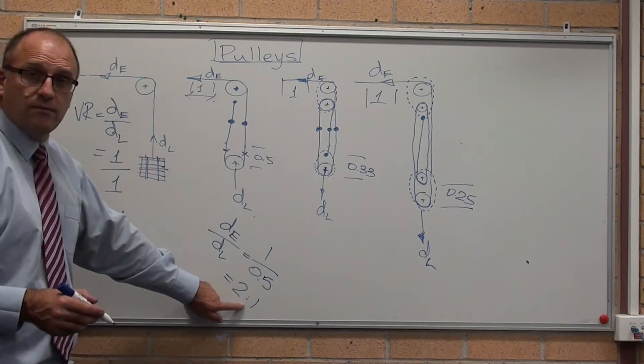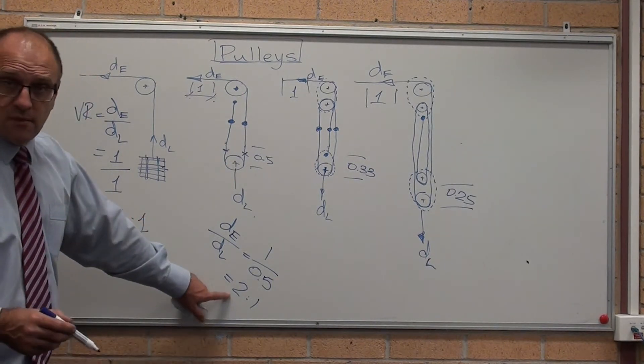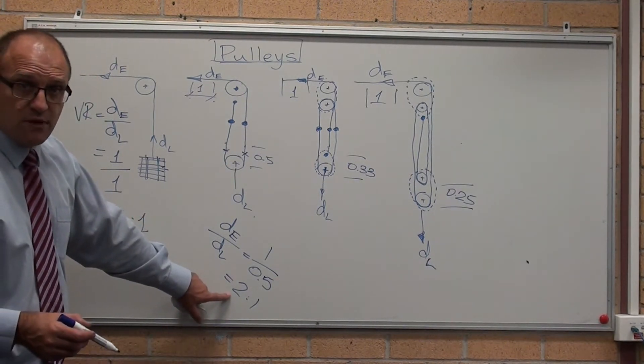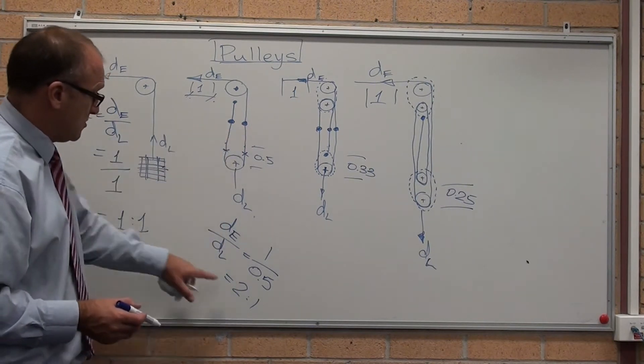Because it's a ratio. You've got to have two things for a velocity ratio. And notice, one, two ropes, two.